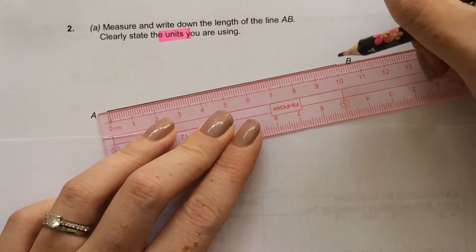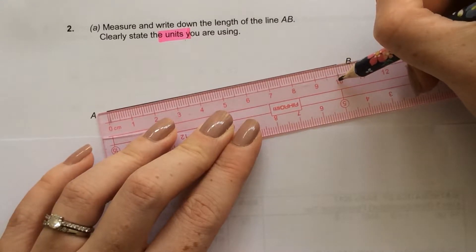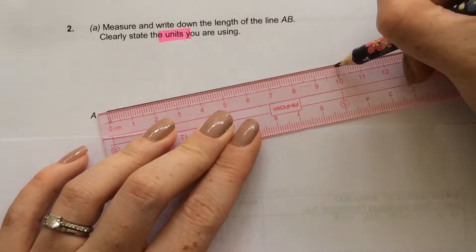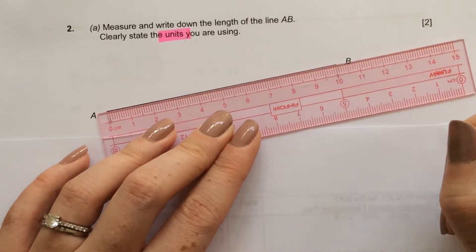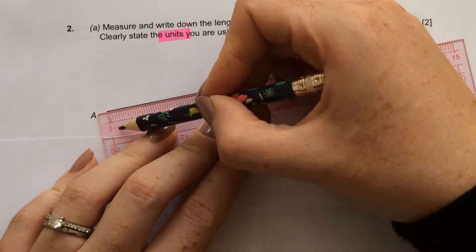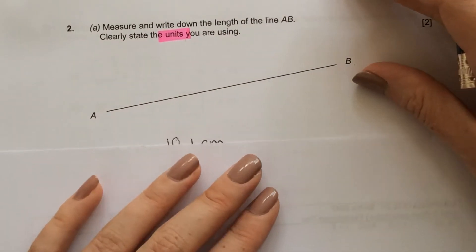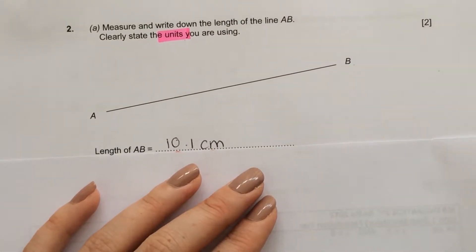it ends just over 10, so it's 10 and 1 line. So that would be 10.1, and we're measuring in centimetres, the ruler will tell you. So that will give me 10.1 centimetres.